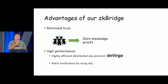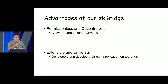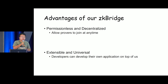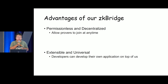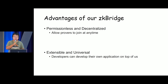Second, we solve the latency issue by introducing a highly efficient zero-knowledge proof protocol called deVirgo. Under deVirgo, we can prove blocks in around 15 seconds, so it's fairly efficient. Additionally, our bridge is permissionless and decentralized, meaning that any prover capable of running the deVirgo protocol can join our network anytime. It's also extensible and universal, meaning any developer can develop their own application.